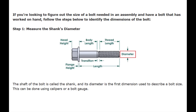If you're looking to figure out the size of a bolt needed in an assembly and have a working bolt on hand, follow the steps below to identify the dimensions of the bolt. Step 1: Measure the shank's diameter. The shaft of the bolt is called the shank, and its diameter is the first dimension used to describe a bolt size. This can be done using calipers or a bolt gauge.